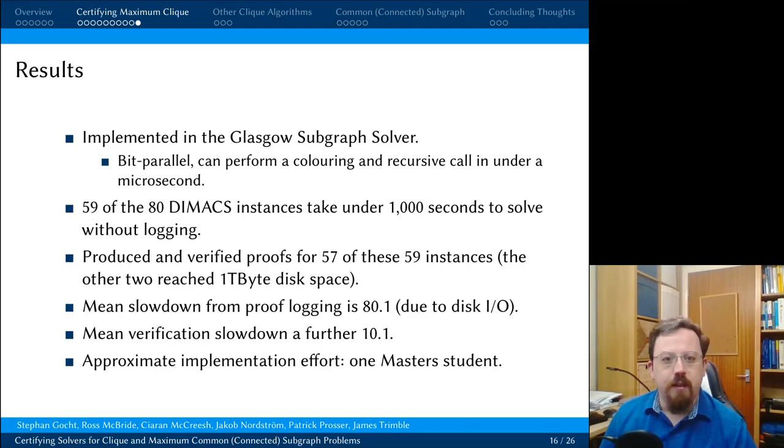So we implemented this in the Glasgow Subgraph solver, which has a dedicated clique solver. It's not the fastest clique solver in the world. It might be the fastest correct clique solver in the world. It's a bit parallel solver. It can perform a colouring and a recursive call in under a microsecond. So bear that in mind when you see the overheads that proof logging introduces. We can solve 59 of the 80 DIMACS benchmark instances in under a thousand seconds if we don't have proof logging. We managed to produce and verify proof for 57 of these 59 instances. The other two reached a terabyte of disk space and we had to kill them.